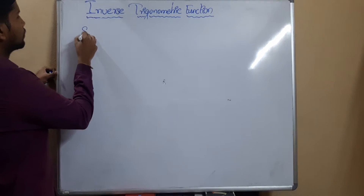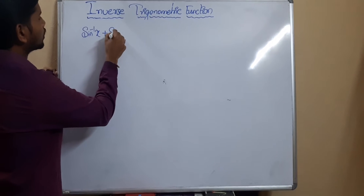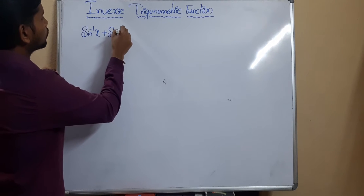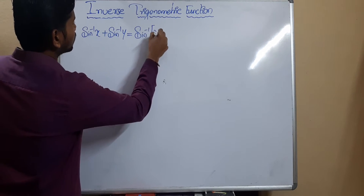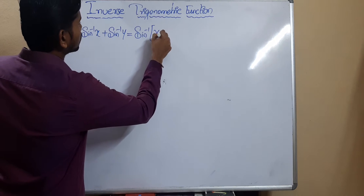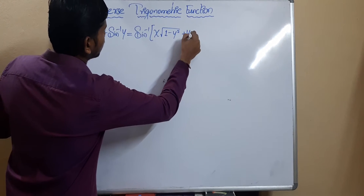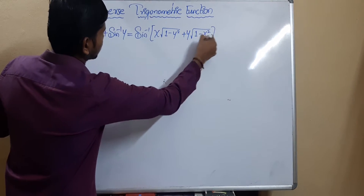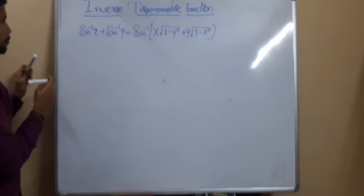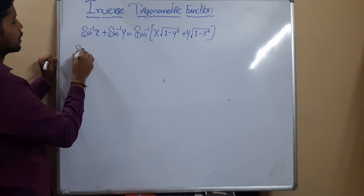The first formula is: sin⁻¹(x) + sin⁻¹(y) = sin⁻¹(x·√(1 − y²) + y·√(1 − x²)). This is a particular formula you need to remember. I'll derive it in one or two minutes.